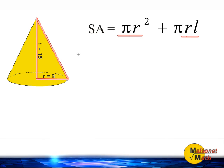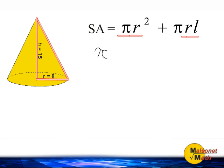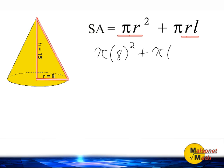So first I'm going to plug in the value of our radius into our equation, and then I'm going to use the Pythagorean Theorem to figure out the length of the slant height. I'm going to write pi times the radius, which is 8 units, squared, plus pi times our radius, which is also 8, multiplied by the slant height, which we are trying to calculate using the Pythagorean Theorem.